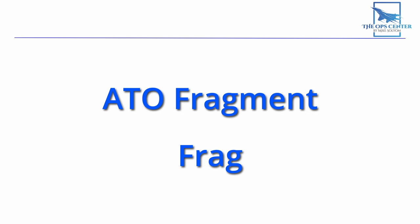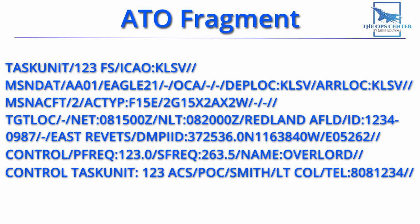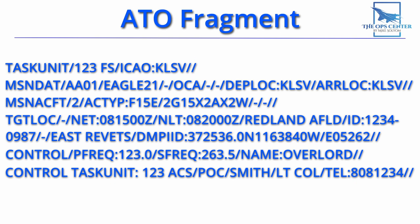Usually it's just enough for an individual flight to know when and where they need to be. Today this is done in a secure online app, but it used to be sent out in a printable format where each individual fragment would look something like this. At the top, we see the unit being tasked and the ICAO name for the airfield that they're at — in this case, it's Nellis Air Force Base in Nevada. You can tell when a line ends with a double slash.